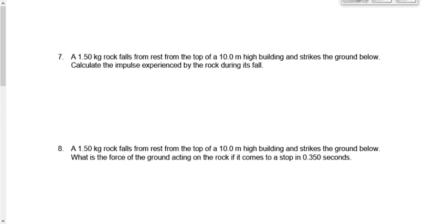Impulse is F times T. So if the force is to the right, then the impulse should be to the right. But in this case, question number seven has an impulse that's downward. Question number eight has a force that's positive, upward. So why?